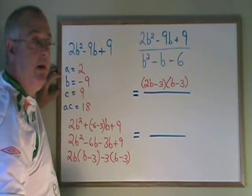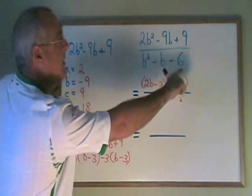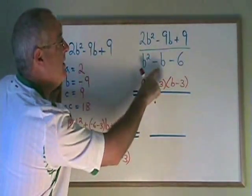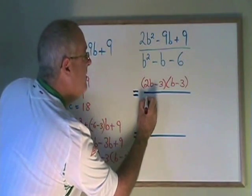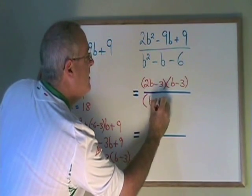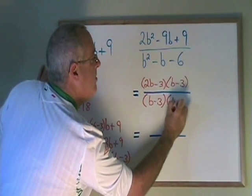Using the simple trinomial method, I will factor the denominator. What two numbers multiply to give negative 6 and add to give negative 1? Those two numbers are negative 3 and positive 2. So I end up with b minus 3 and b plus 2.